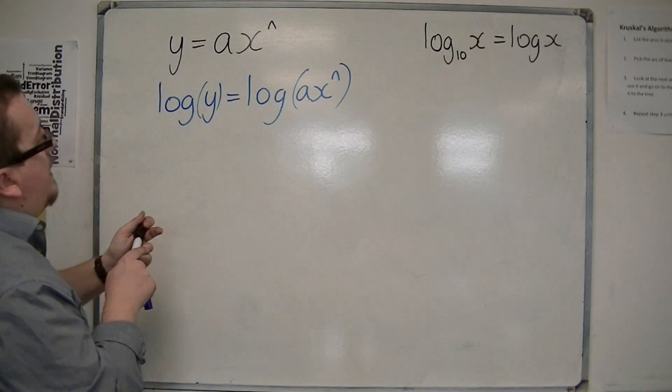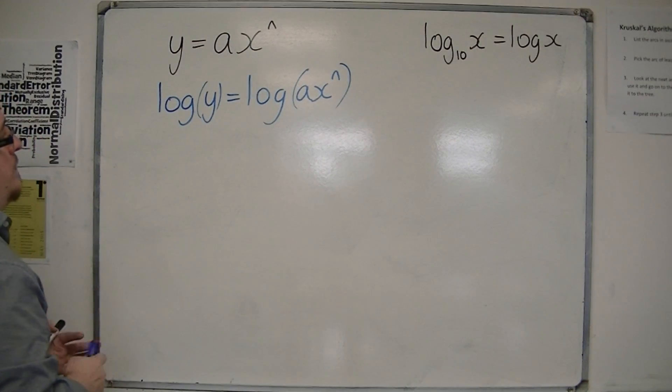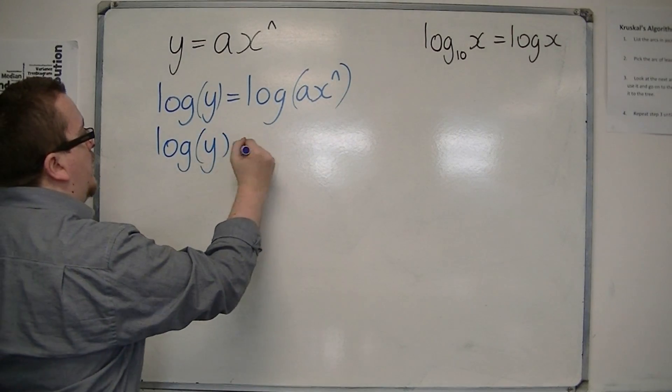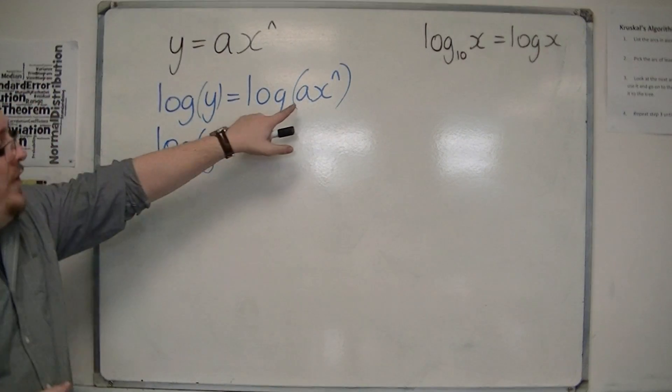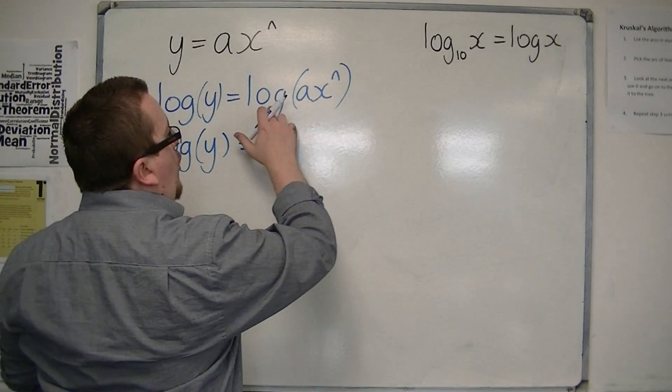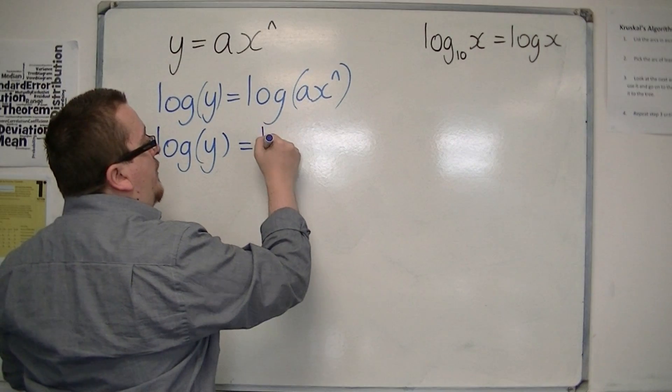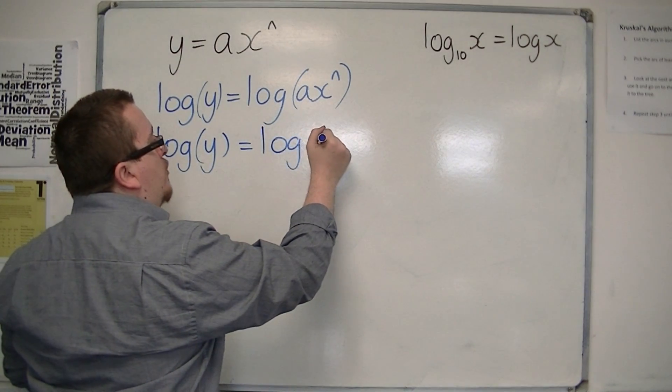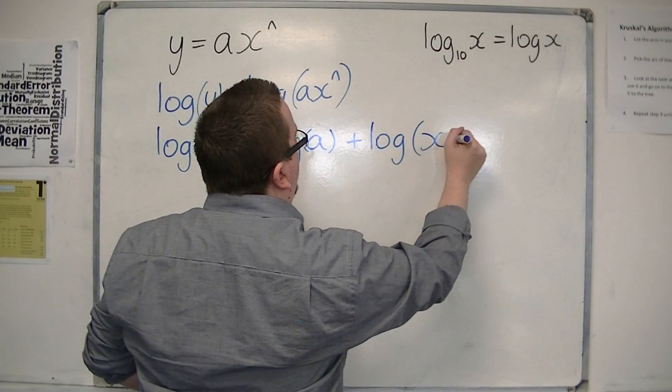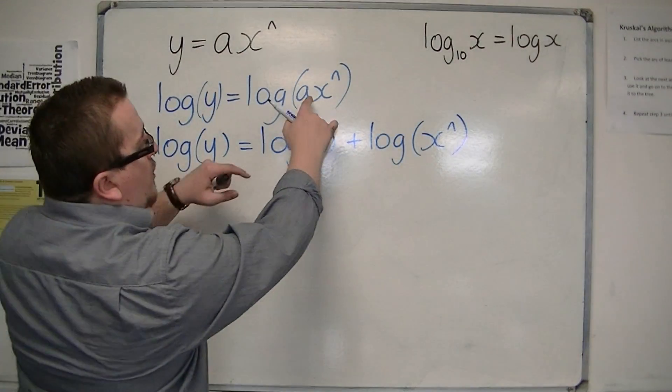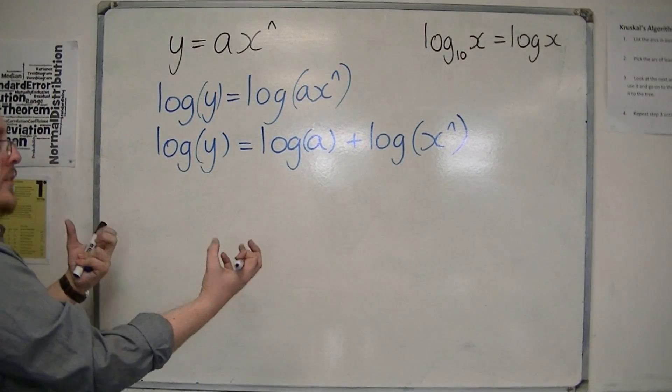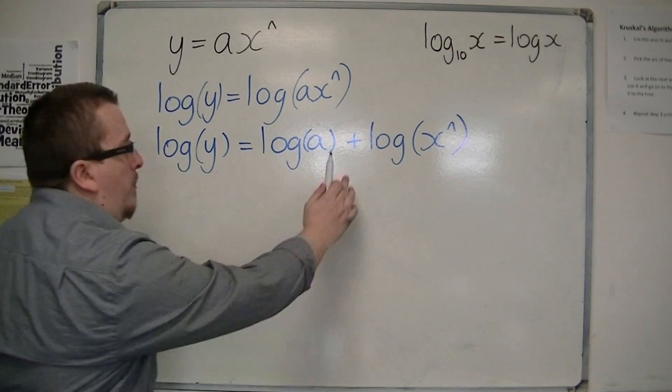So what we've got here is that we've logged both sides of the equation. Now if I leave the left-hand side alone, using the first law of logarithms that I introduced in the previous video, if I've got log of a times x to the n, that is the same as log of a plus log of x to the n, because if we've got a multiplication, then I can split the logarithms apart at the same base and put a plus between them.